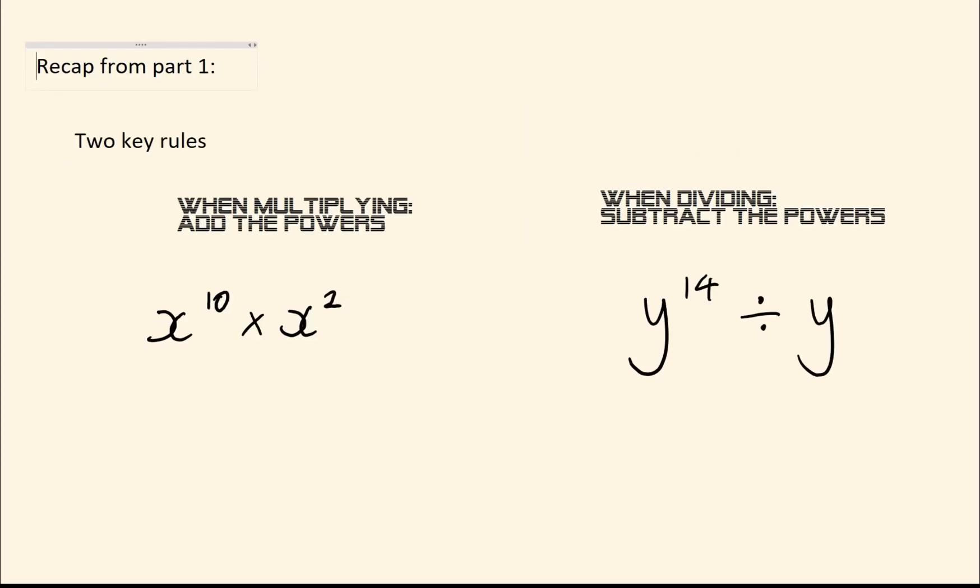From Part 1 we saw these two basic rules: when you multiply, you just need to add the powers, so this would be x to 12, and when you divide and subtract the powers. Remember that if you see no power, it means that the power is 1. So this would equal y to the power of 13.